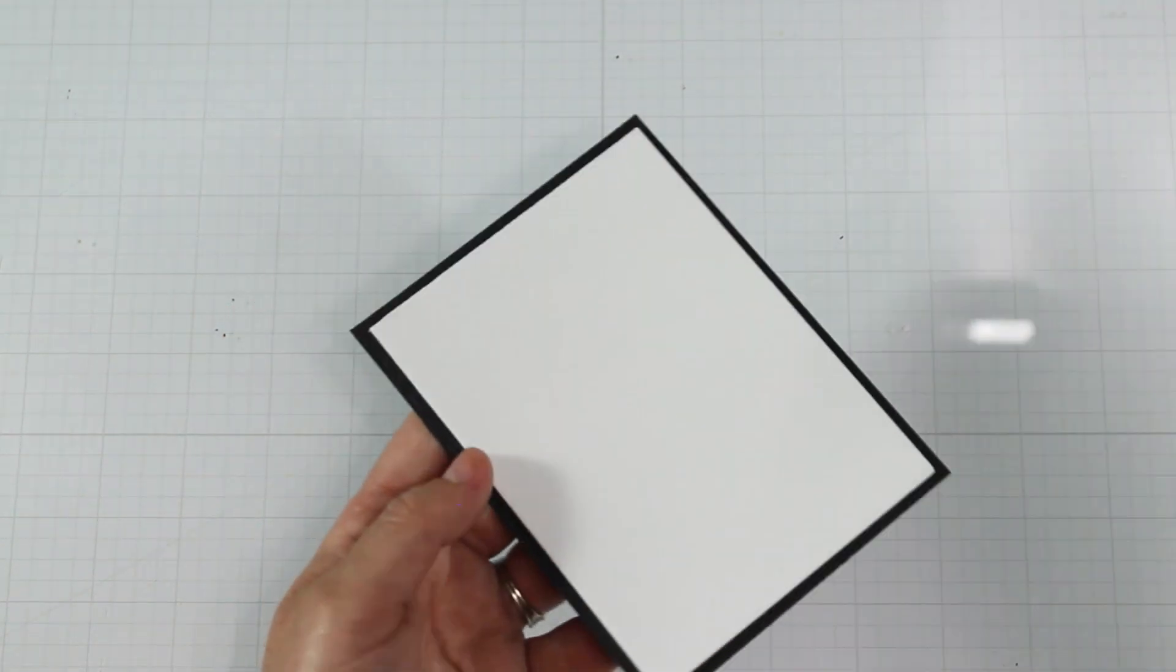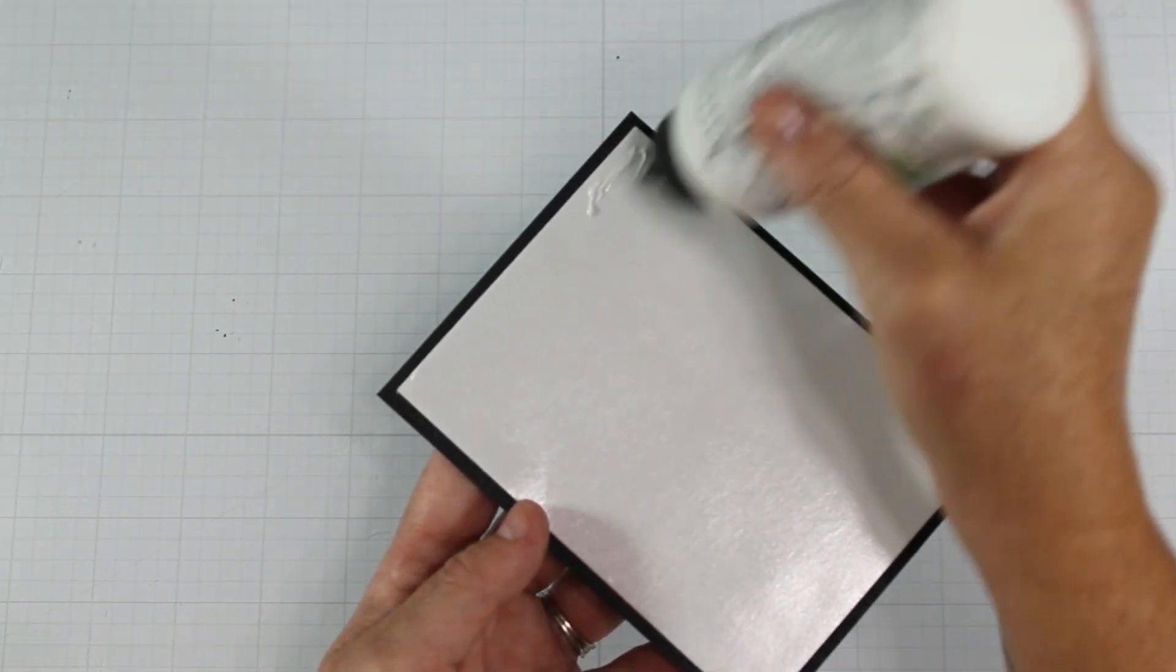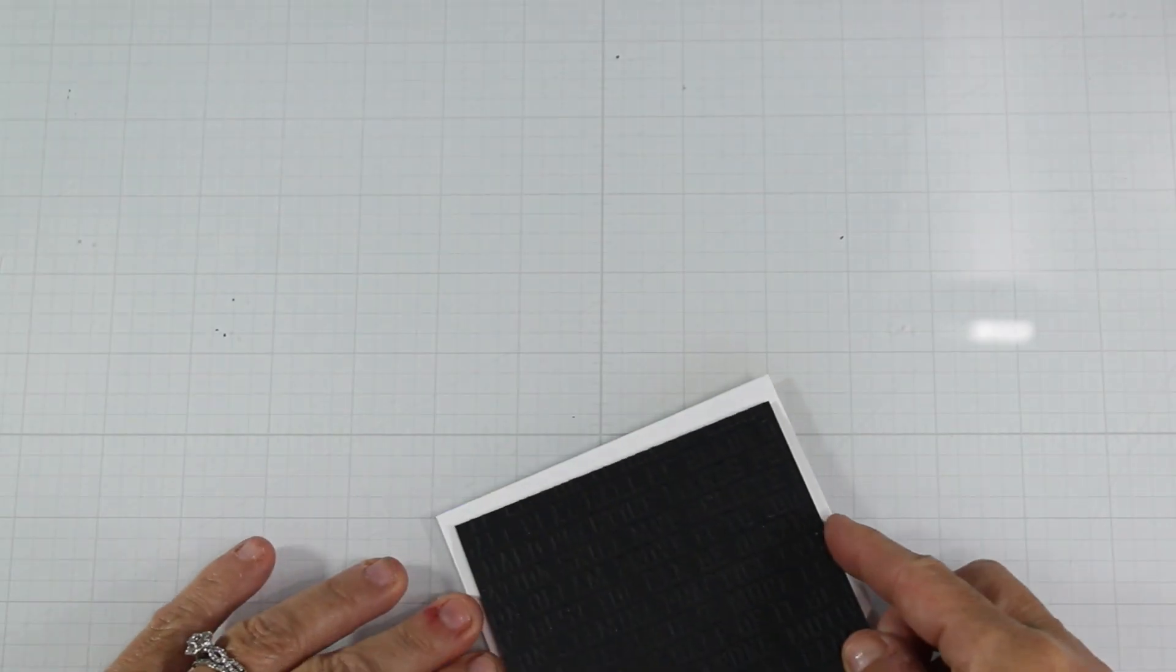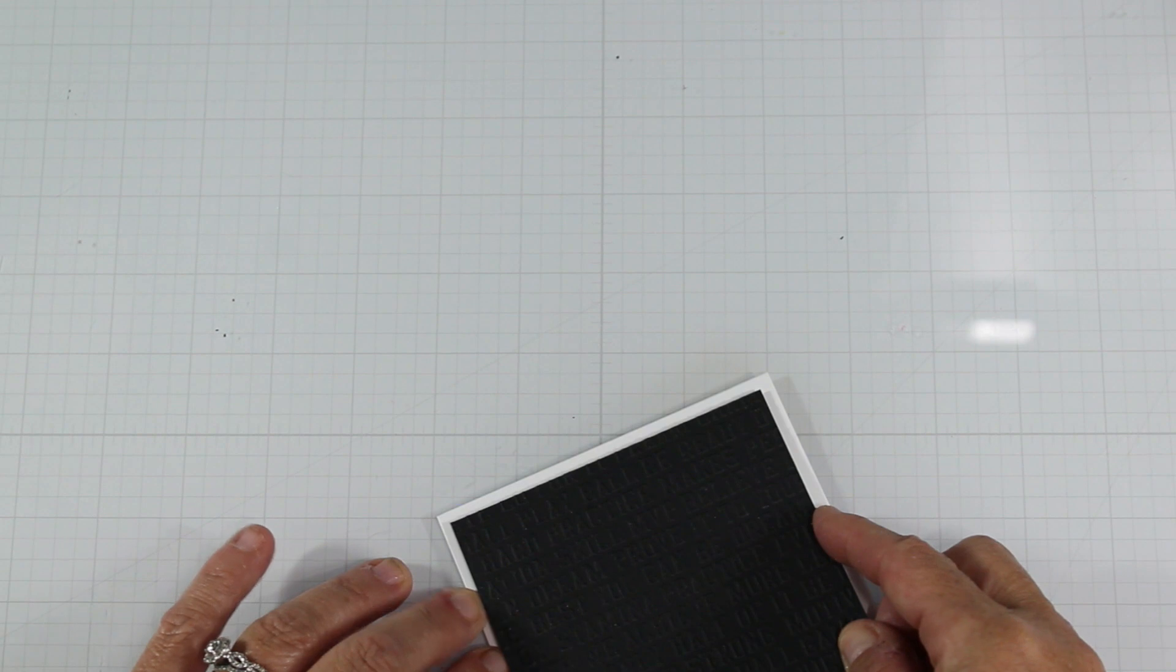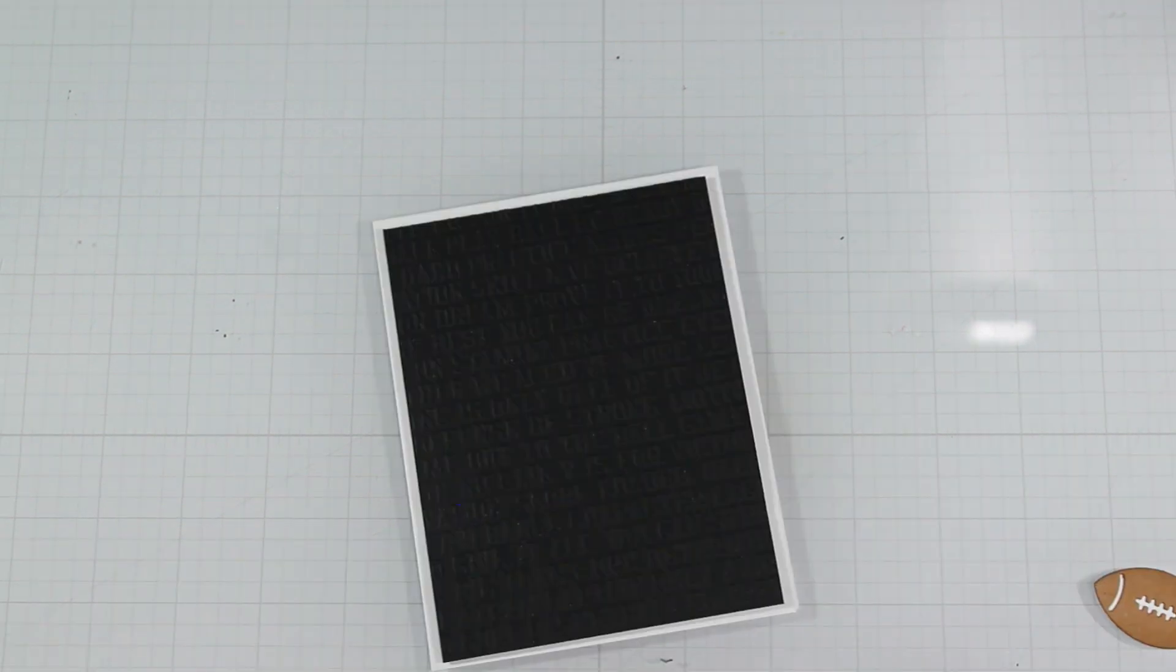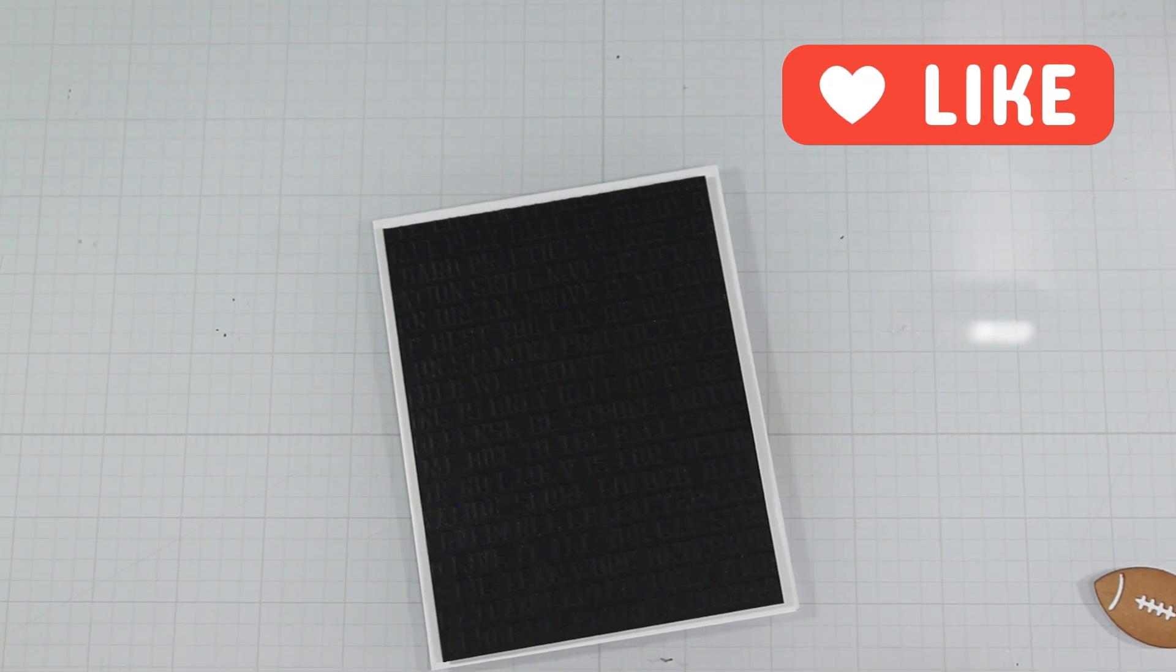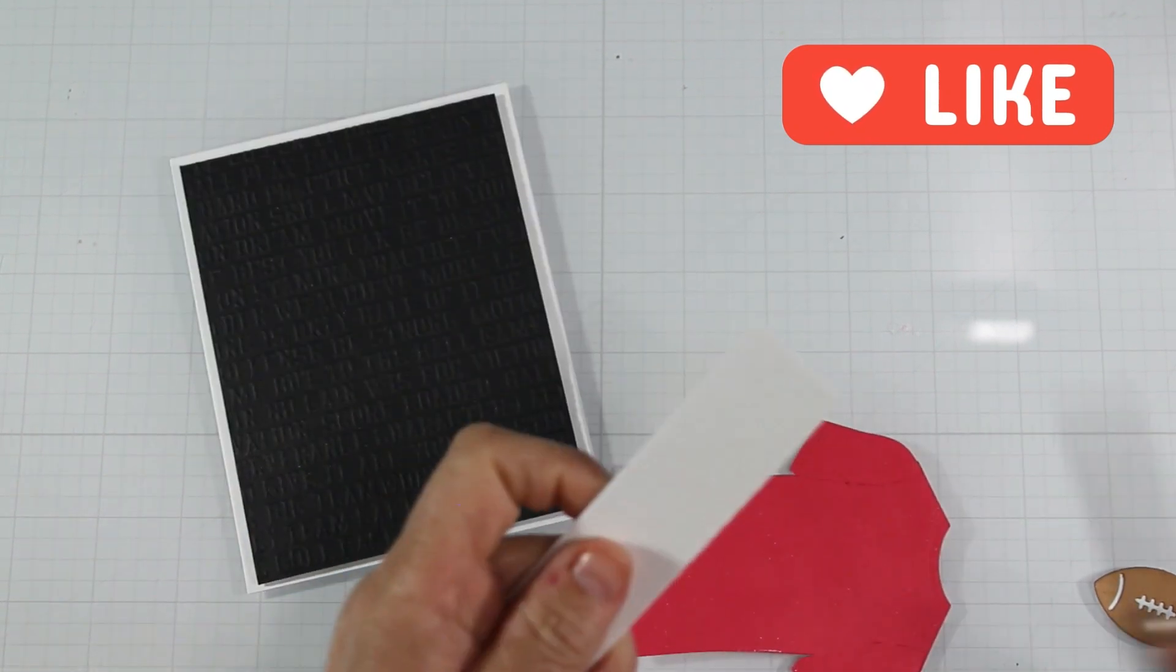So this is an A2 top folding card base. And then because I like to have a little bit of wiggle room in case I don't get my layers on straight, I do use some Barely Art Glue, which is available in the Spellbinder shop as well as your other places that you like to shop. So that'll be linked in the description box below.